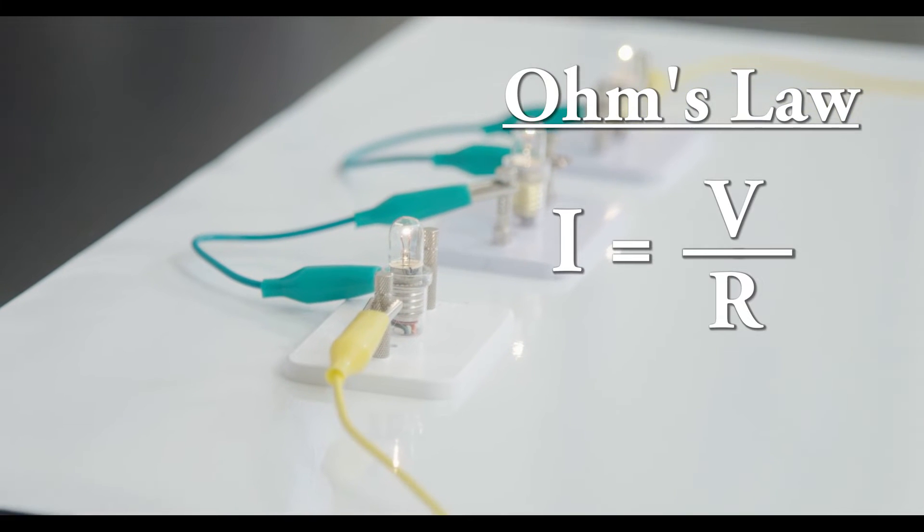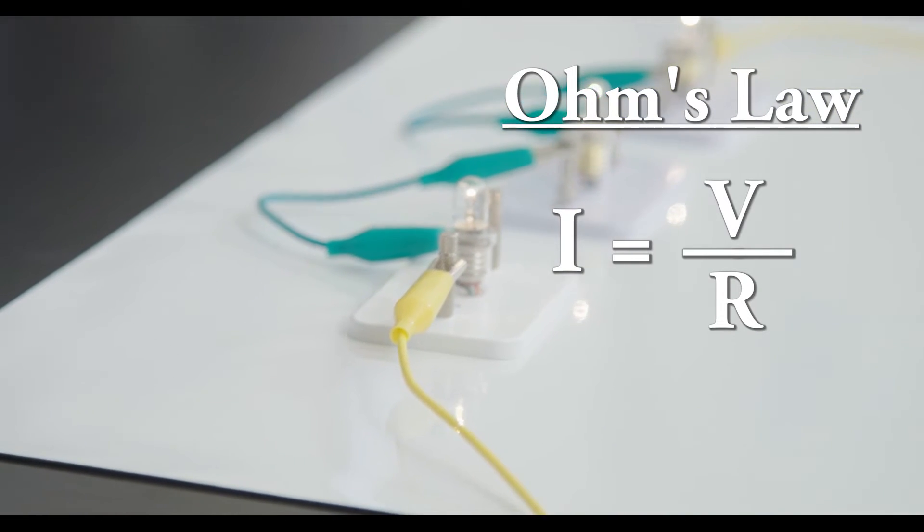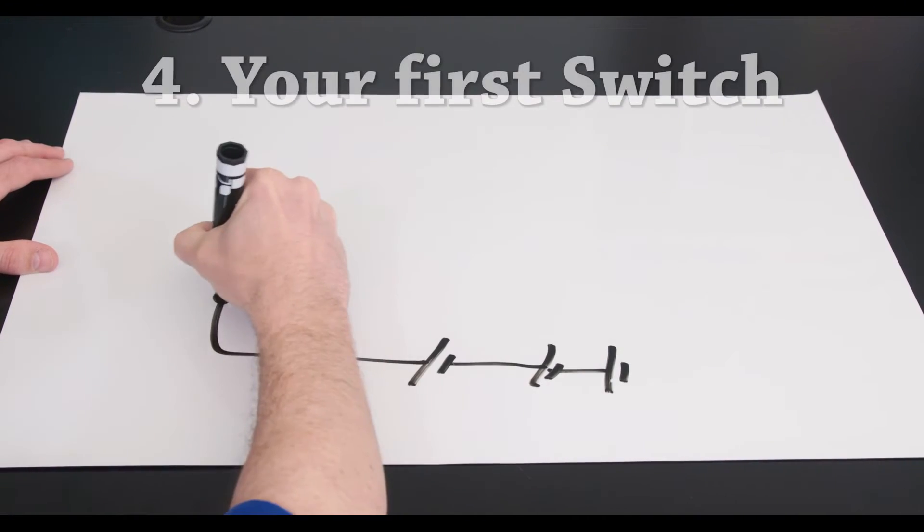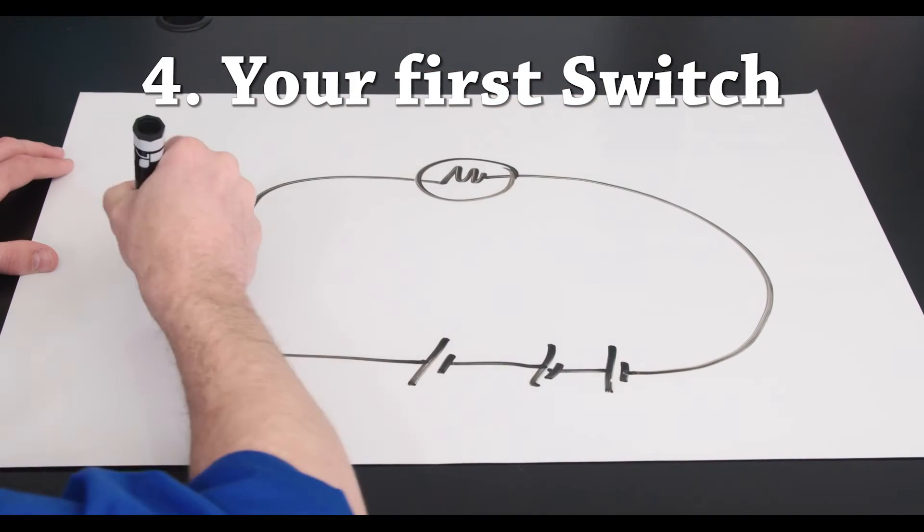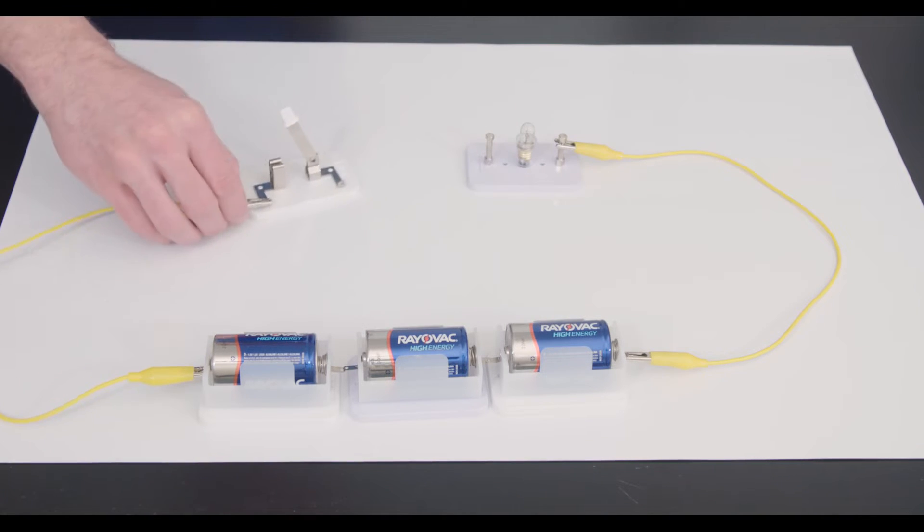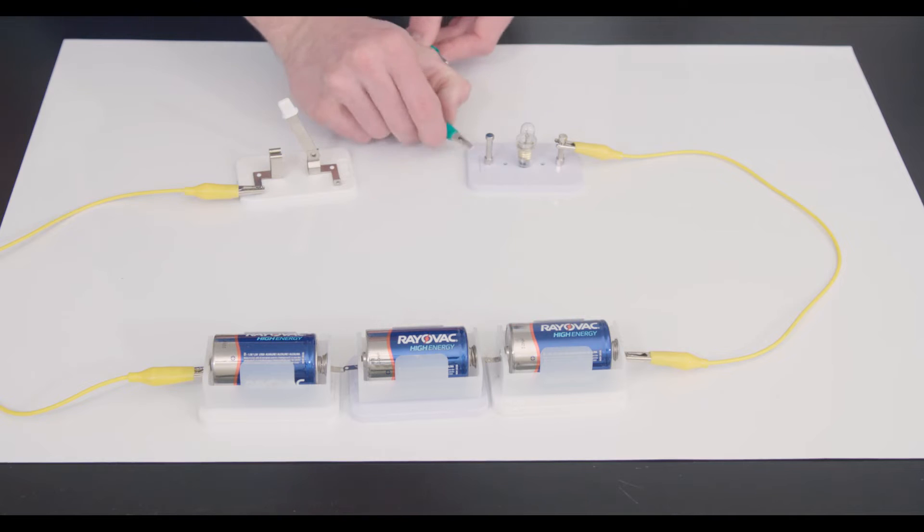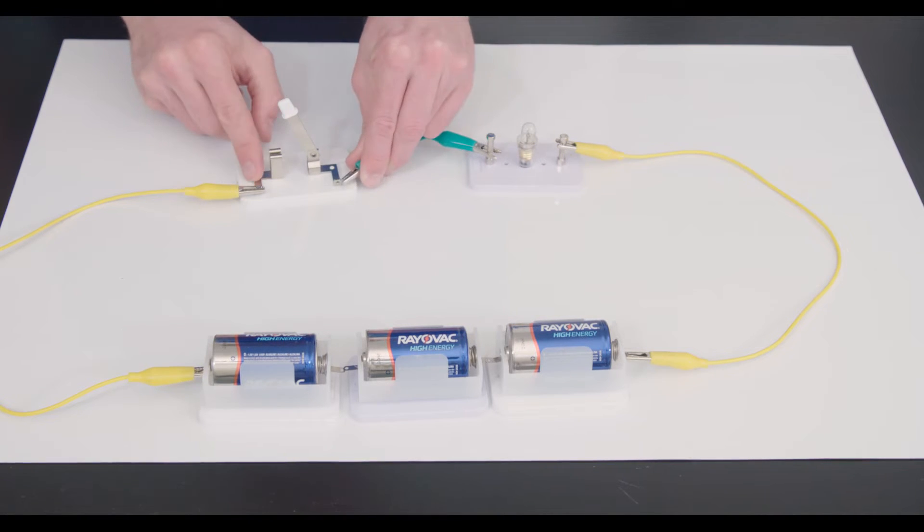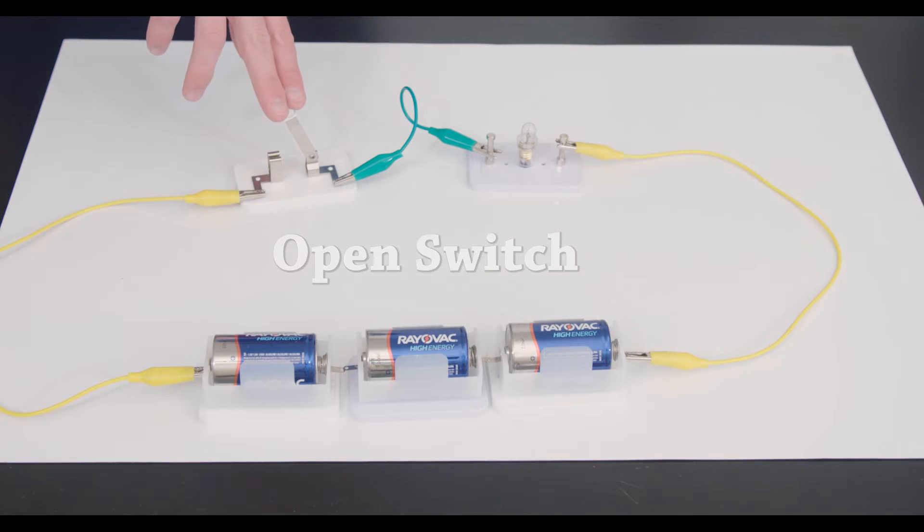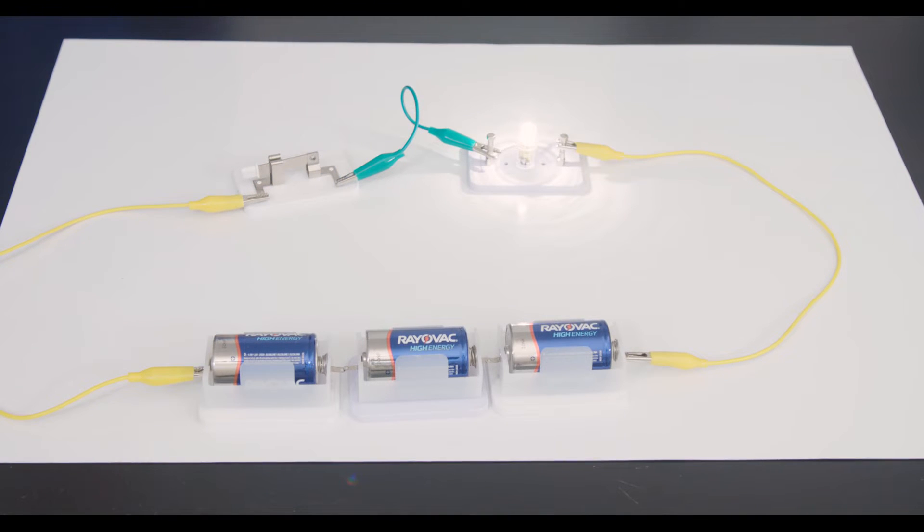Number four: your first switch. Going back to three batteries and one light bulb, I'm going to add a switch. A switch is a circuit breaker. That means it can interrupt the flow of current, but I'm sure you've used a switch before. Okay, here we go. Oh, it doesn't light. This is called an open switch. But when we close it, it lights up. Open: off. Closed: on.